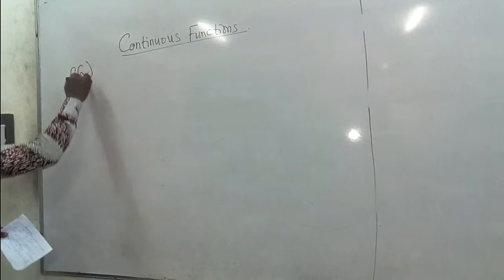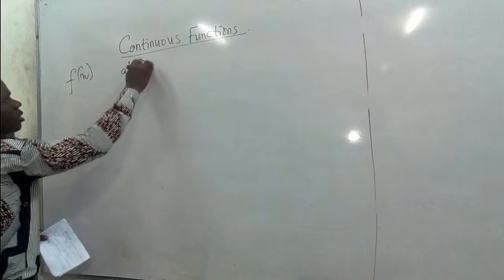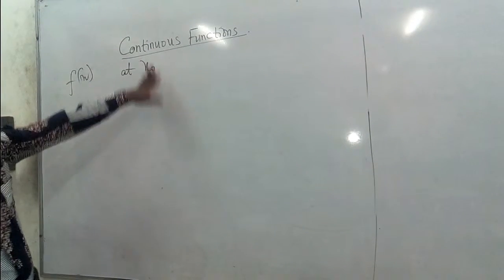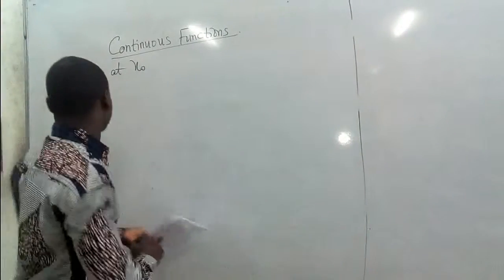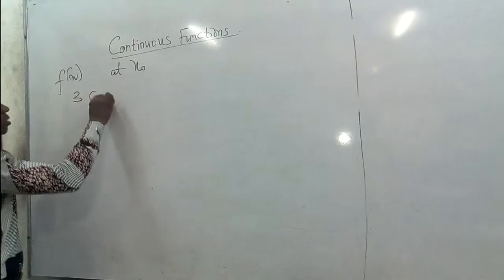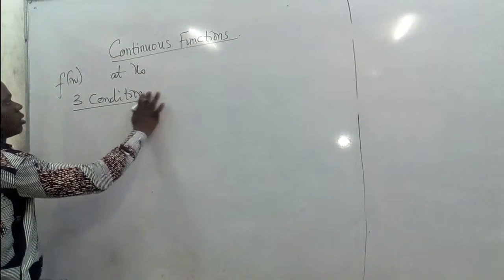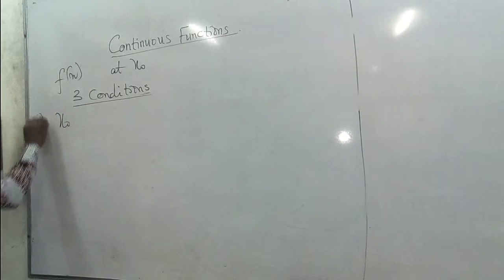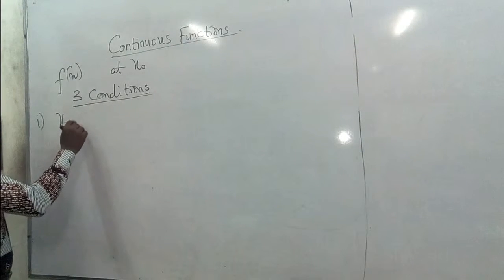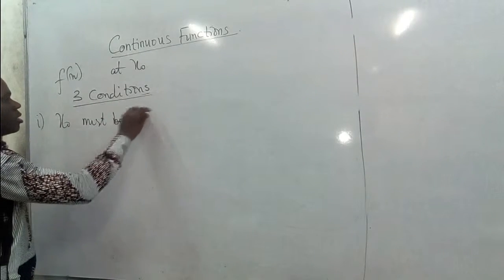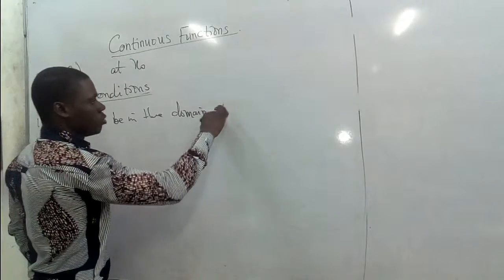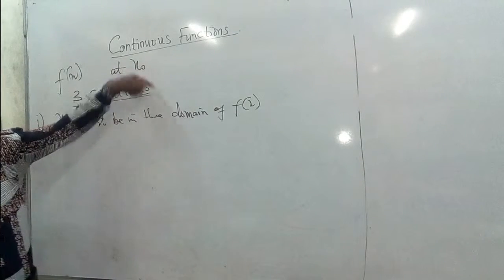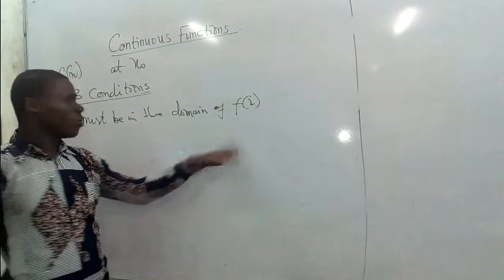If this function F is continuous at x naught, then we want to look at three conditions that must be satisfied. The first condition is that x naught must be in the domain of F. So if this function is continuous at x naught, then x naught must be found in the domain of F.